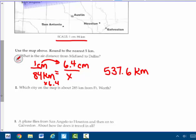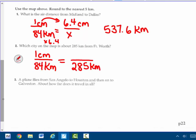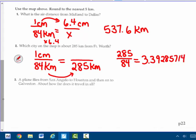Which city on the map is about 285 kilometers from Fort Worth? One centimeter is 84 kilometers. So from Fort Worth, 285 kilometers would be how many centimeters away using our scale? 285 divided by 84 will tell me what they multiplied by. If you did 285 divided by that 84, you would get that it's about, says to the nearest five kilometers, 3.39, 2, 8, 5, 7, 1, 4, 3, and it keeps going.